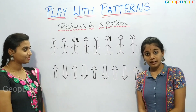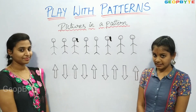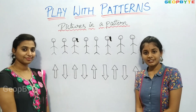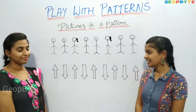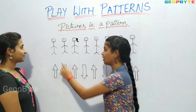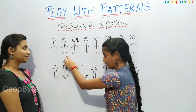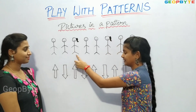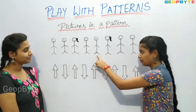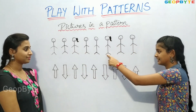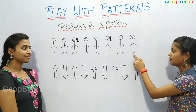We have used the rule of a girl after two boys. Let us see: boy, boy, girl. Boy, boy, girl. Boy, boy.